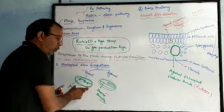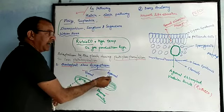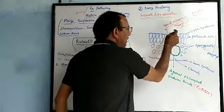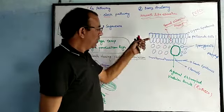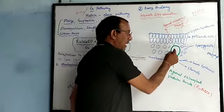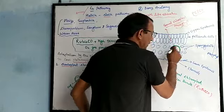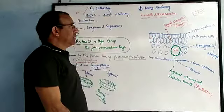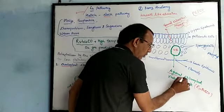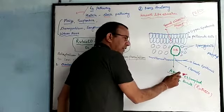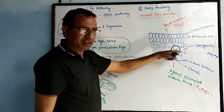So what is Kranz anatomy? Because you can see that chloroplasts are two types present: granular and agranular. Agranular chloroplasts are present in the mesophyll. Granular chloroplasts are present in the bundle sheath cells, which surround the vascular bundle in a wreath-like structure. All this is agranular chloroplast. Rubisco is present in the bundle sheath cells.